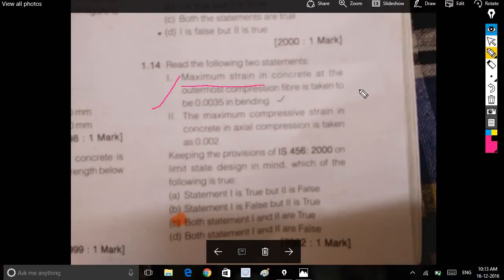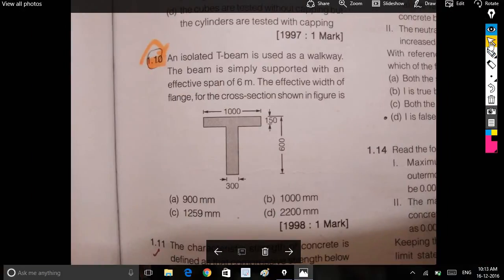Maximum strain in concrete at the outermost compression fiber is taken as 0.0035 in bending. The maximum compressive strain in concrete in axial compression is taken as 0.002. In axial compression, it is taken as 0.002.